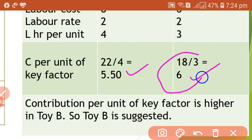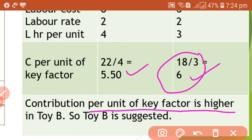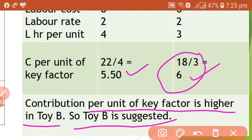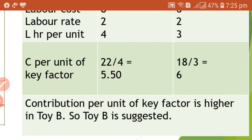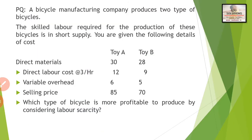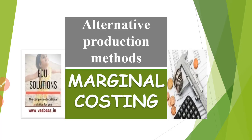Contribution per unit of key factor is 5.5 in case of Toy A and 6 in case of Toy B. The highest contribution per unit of key factor is in Toy B. Therefore, Toy B is suggested as more profitable when labor is the limiting factor.